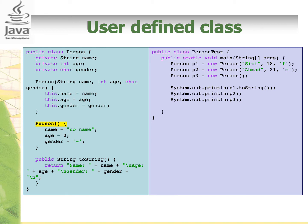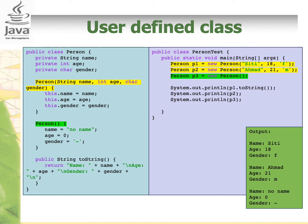The other constructor is the no-argument constructor. It basically initializes the instance variables as 'NoName', 0, and dash. In the PersonTest class, we have the main method. It creates objects of the Person class and calls the constructors, then displays the values. When we run this code, the output shows that for Person P1 and P2, they call the first constructor, and P3 calls the second constructor.